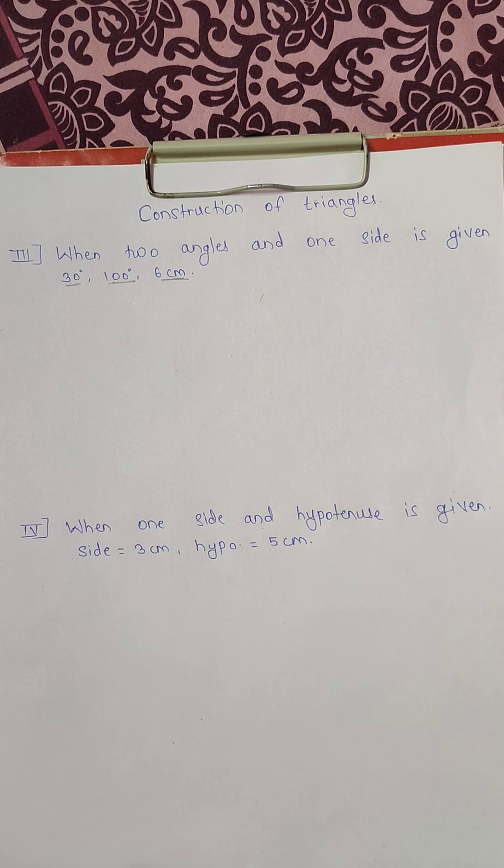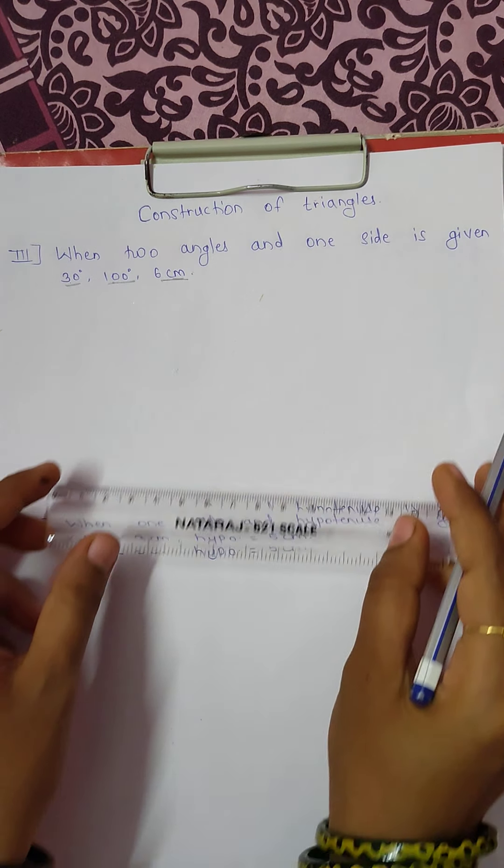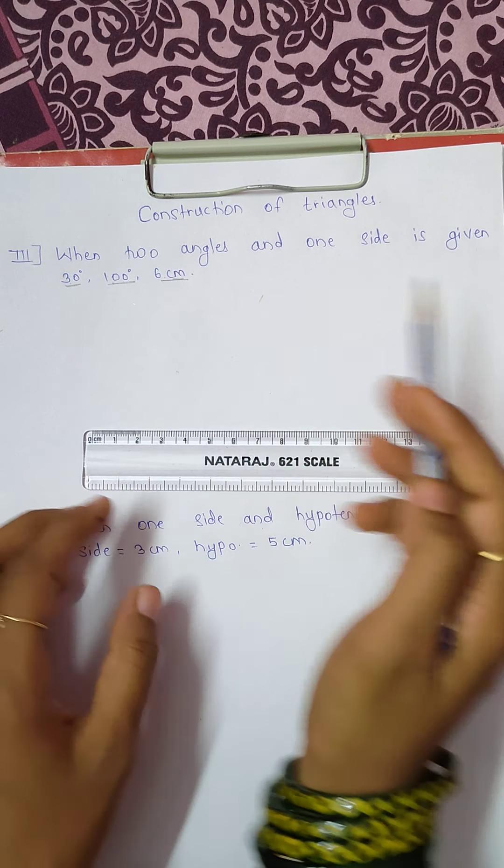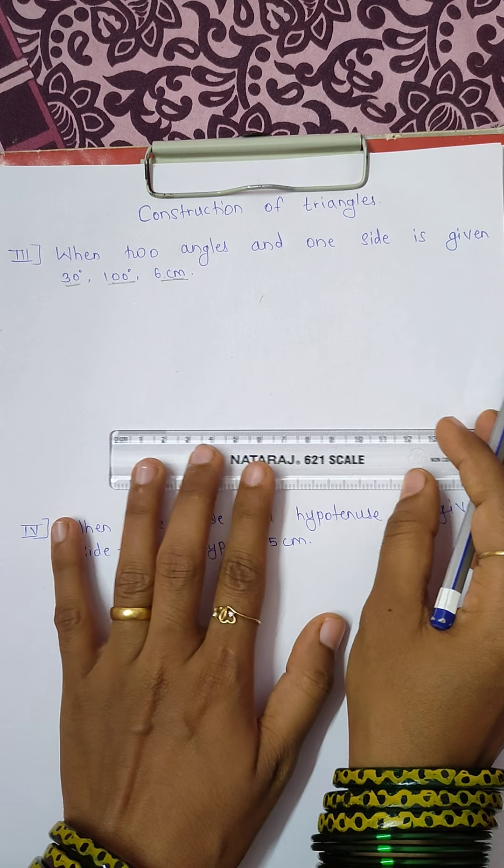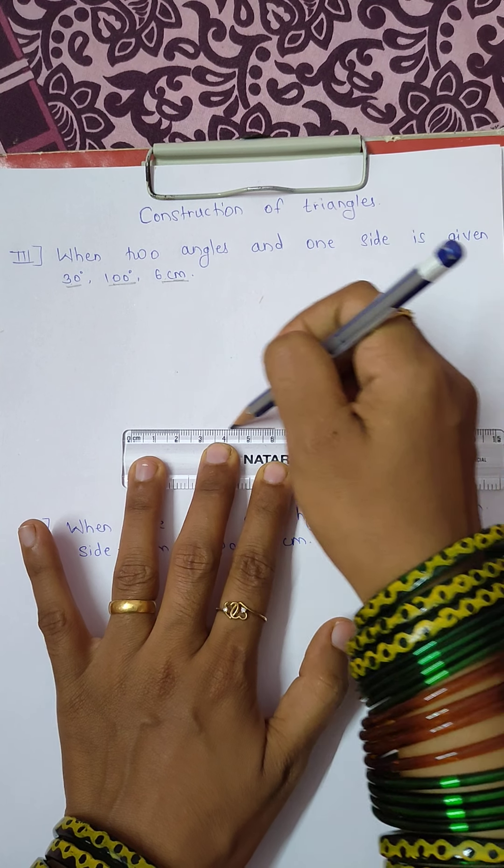With the help of these measurements we have to draw a triangle now. What we will do first, first we will draw a line segment of 6 centimeters. So let's draw a line segment of 6 centimeters.